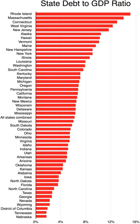State governments of the United States are institutional units exercising some of the functions of government at a level below that of the federal government. Each state's government holds fiscal, legislative and executive authority over a defined geographic territory.